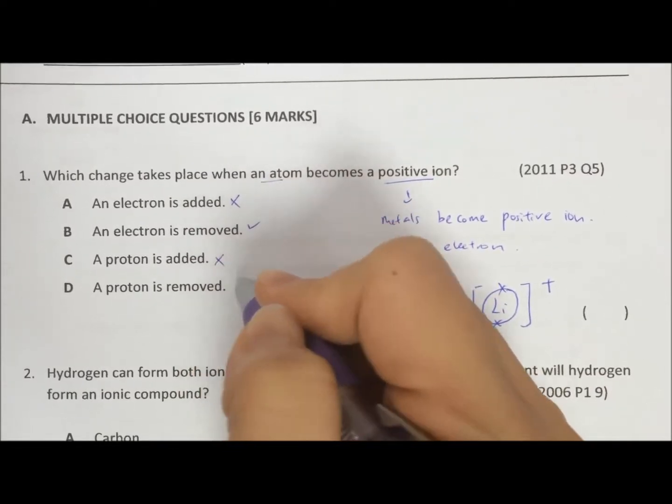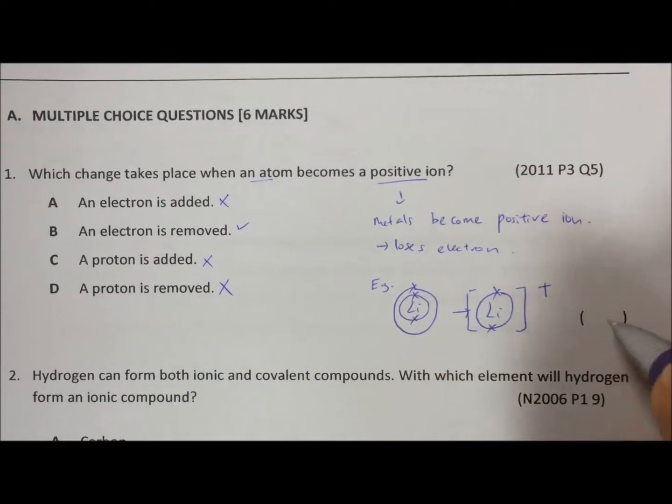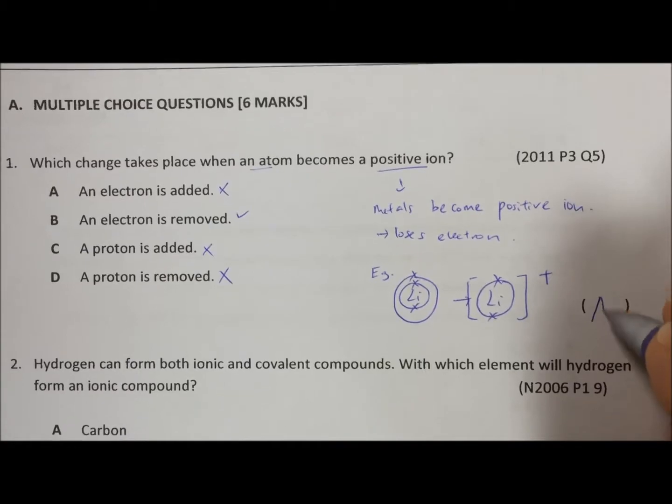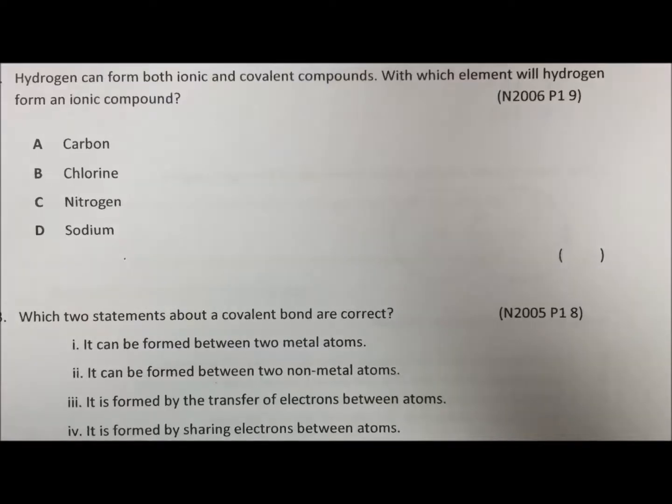So A is wrong, B is correct, C is wrong, D is wrong. It only has to do with electron losing, so the answer is A.